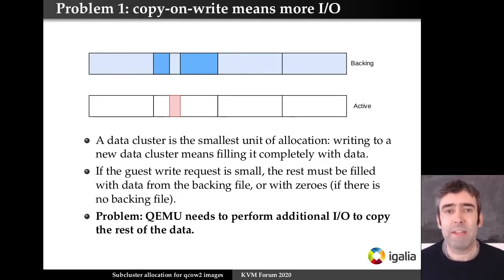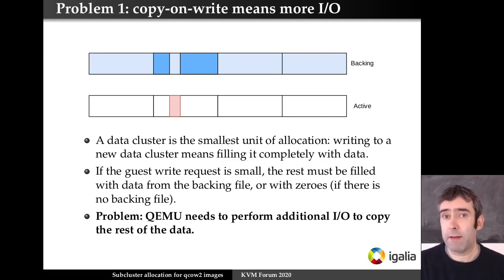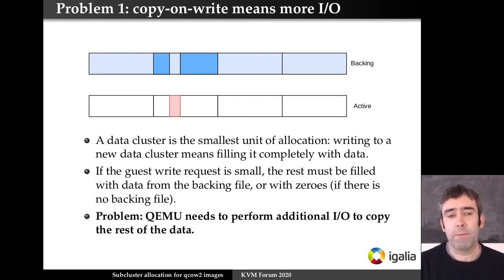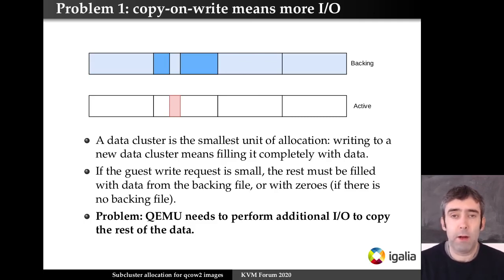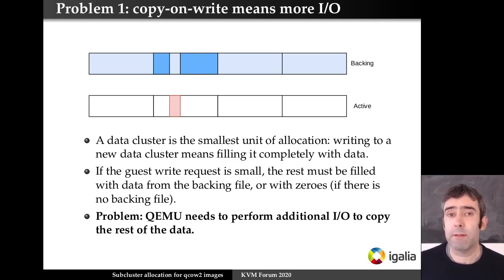The cluster is the smallest unit of allocation. So every time we allocate a new cluster, if the write request is smaller than the cluster size, then we need to fill the rest with data. That means we either go to the backing file and get it from there — we write the area in pink, we need to go to the backing file and read the areas in dark blue and copy them to the active file. Or if there's no backing file, we fill it with zeros. QEMU needs to perform an additional I/O to copy the rest of the data, so copy-on-write can be an expensive operation.